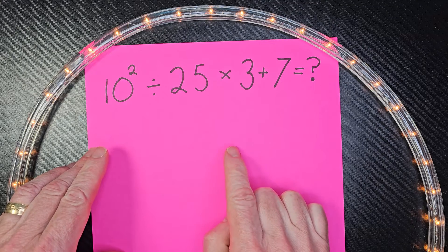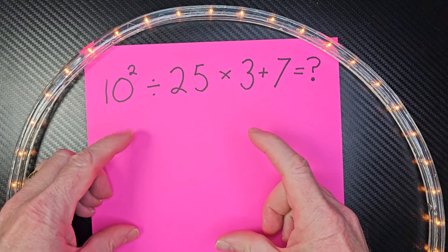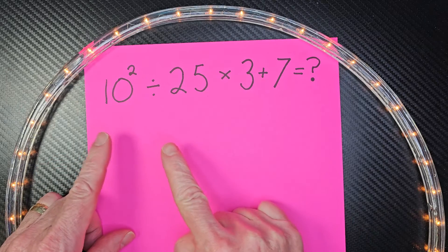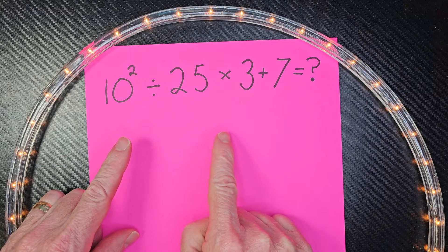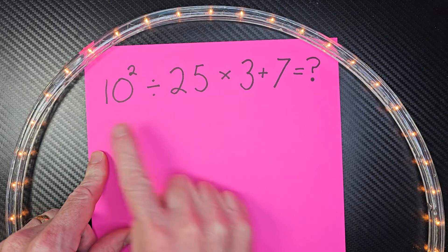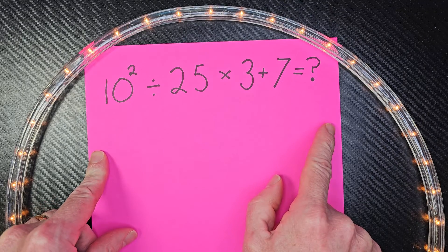Remember with order of operations, we do what's inside parentheses first, then exponents, then multiplication and division from left to right, and finally addition and subtraction from left to right.